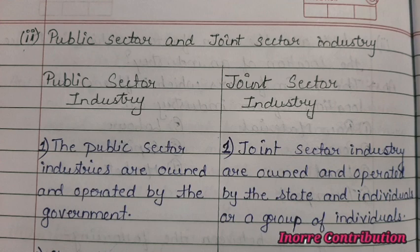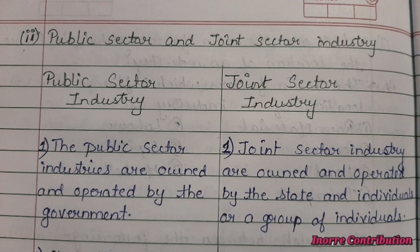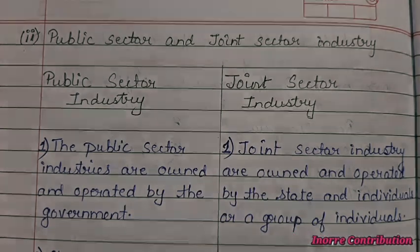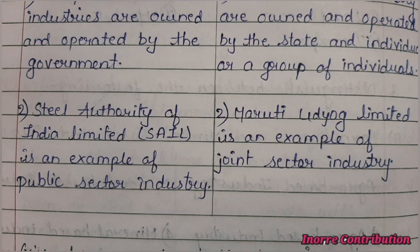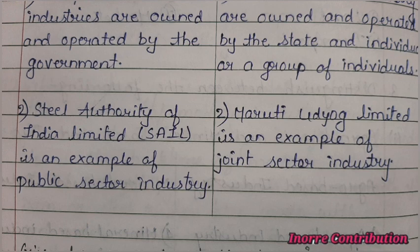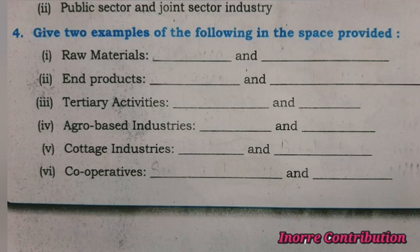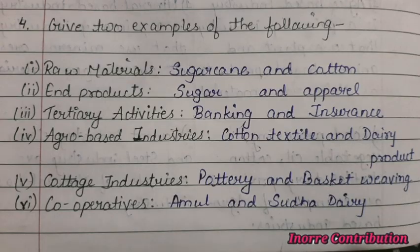Difference between public sector and joint sector industries. Public sector industries are owned and operated by the government. Example: Steel Authority of India Limited (SAIL). Joint sector industries are owned and operated by the state and individuals or a group of individuals. Example: Maruti Udyog Limited.